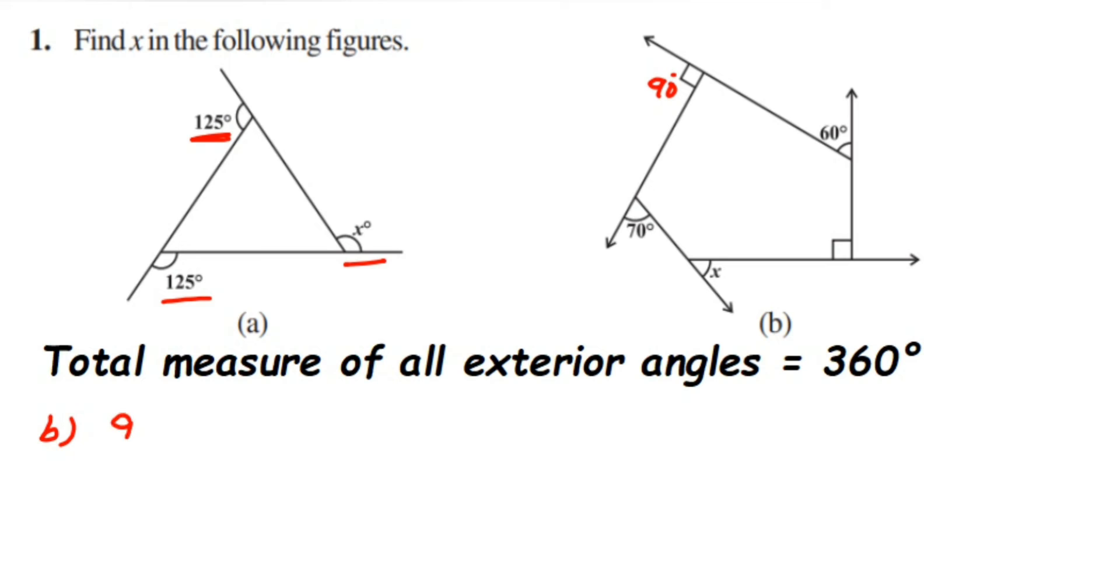So 90 degrees plus second angle is 70 degrees plus third angle is x. This angle is x plus, now we have not given fourth angle but you can see that line is extended here, right. So you can see the interior angle, this angle is 90.